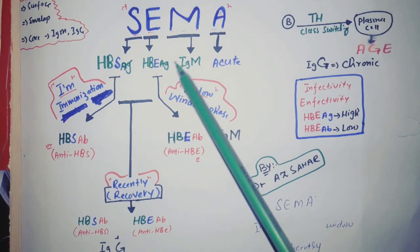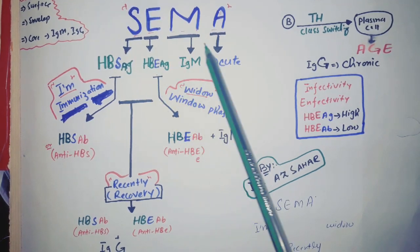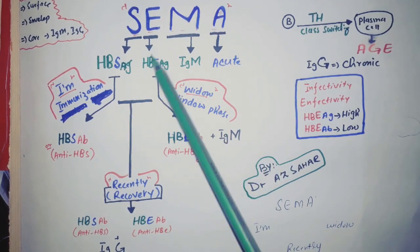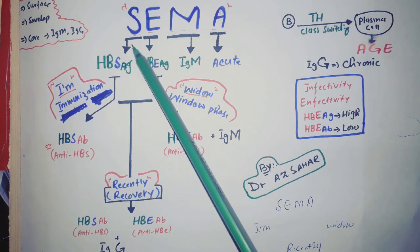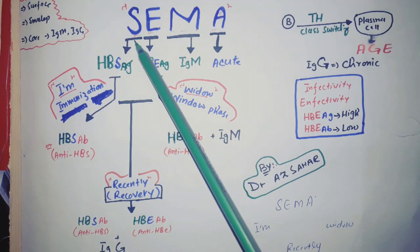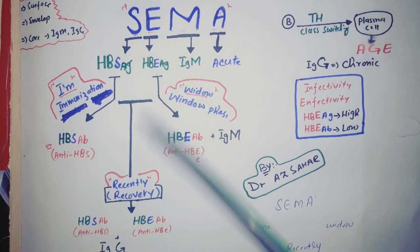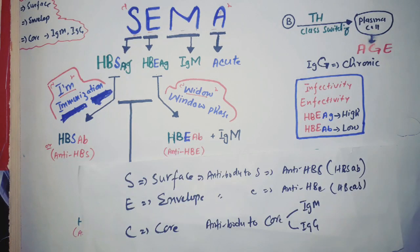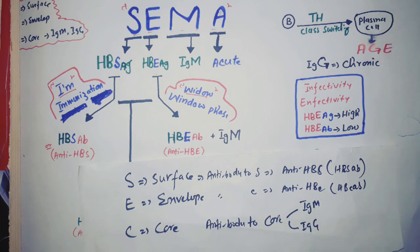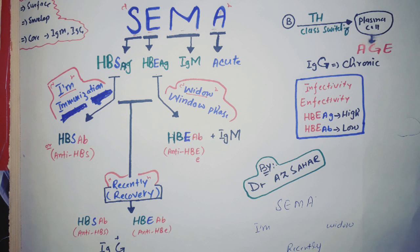Hepatitis B serological markers can be remembered using the mnemonic SEMA. From this SEMA we will explain everything. First we will have antigens and then antibodies. You have to remember that the antibodies against core antigens are IgM and IgG — both IgM and IgG are the antibodies against the core antigen.